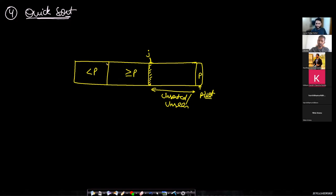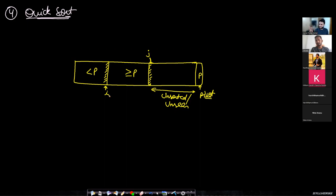For each region to be intact, there has to be a pointer. There is an i-pointer pointing to the boundary element of the region less than p, and j always points to the first unseen element. So we have four regions: less than p, greater than or equal to p, unseen, and the pivot element. Now let's assume the j-th element turns out to be value x, and x is less than p — so it has to fall into the first box.